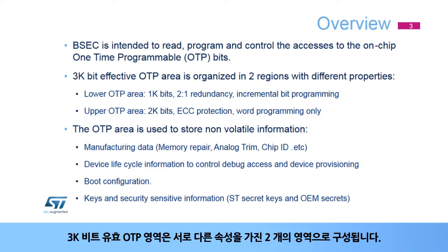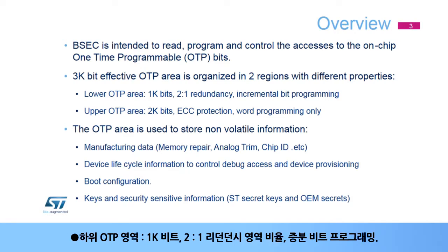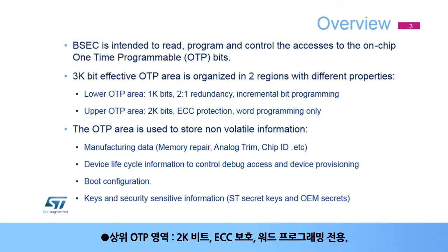The 3-kilobit effective OTP area is organized in two regions with different properties. The lower OTP area is 1-kilobit with 2-to-1 redundancy and incremental bit programming. The upper OTP area is 2-kilobits with ECC protection and word programming only.